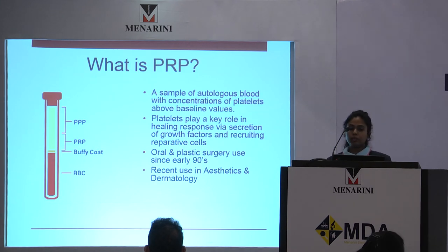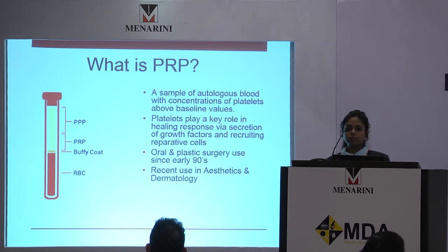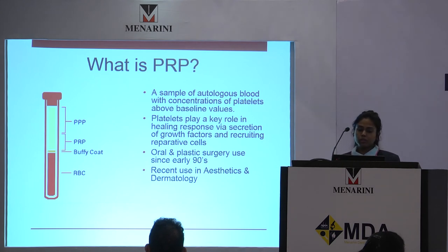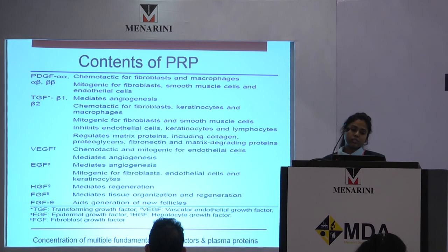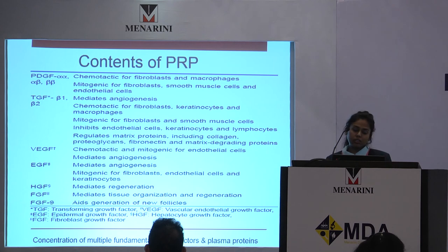Coming to PRP, PRP is nothing but autologous blood with concentrations of platelets above baseline levels. PRP has about 30 bioactive ingredients, some of them being platelet-derived growth factor, transforming growth factor, vascular endothelial growth factor, and others.